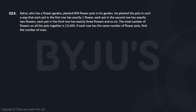In this question, you are given a flower garden with a total of 800 flowers planted in such a way that each plot in the first row has one flower, the second row has two, the third row has three, and so on. We'll take b as the number of rows and a as the number of flower pots.